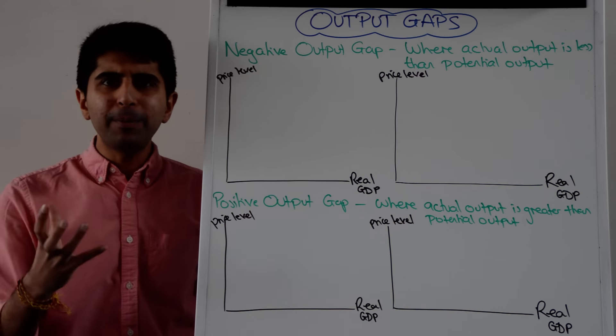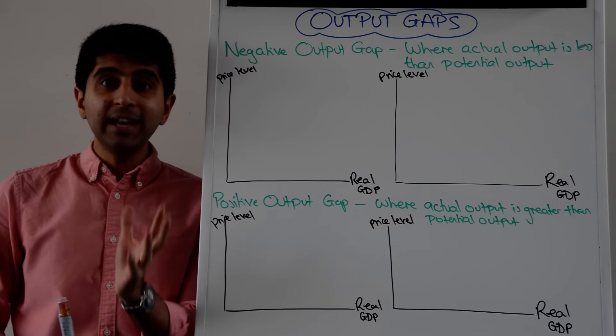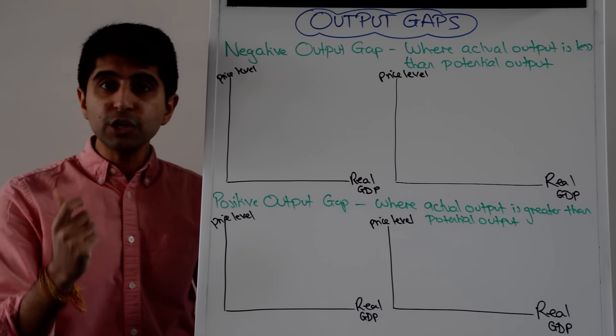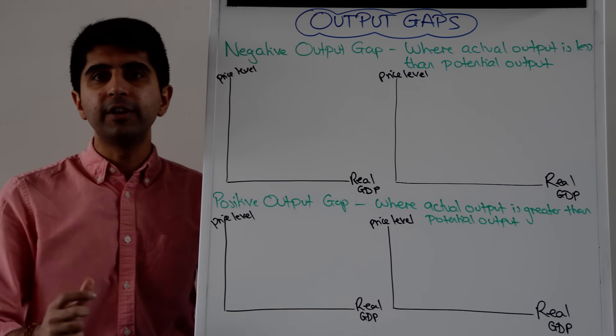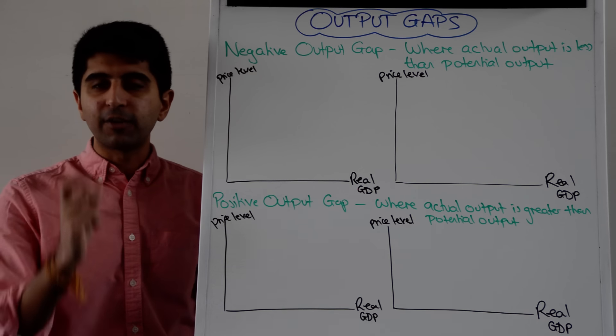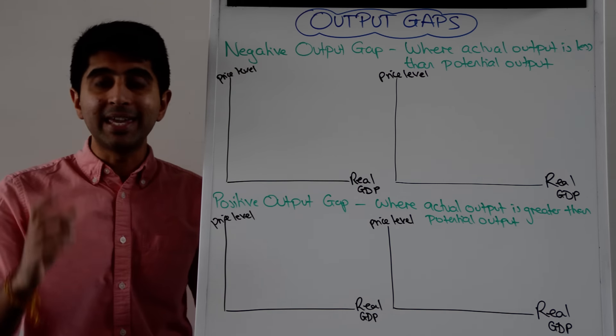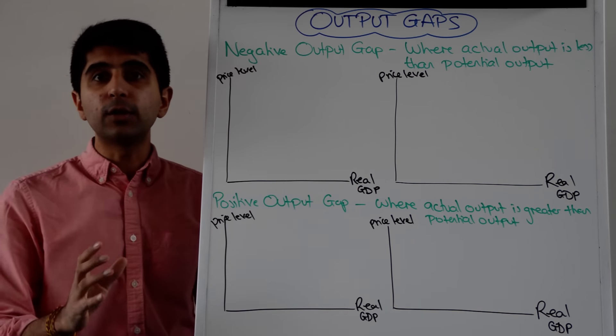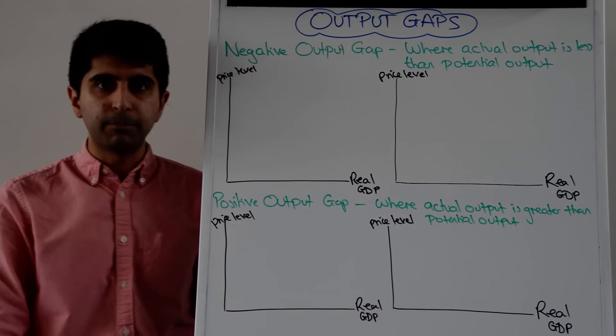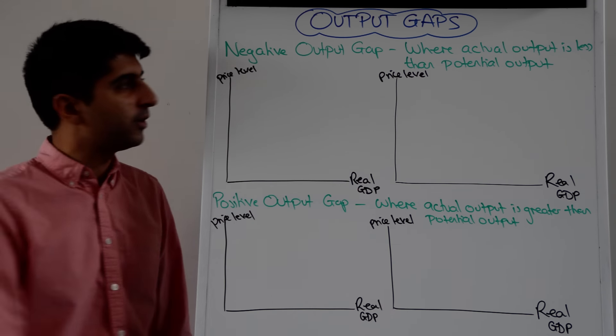Hi everybody! Output gaps occur anytime where the actual level of output is different from the potential level of output, i.e. it is not equal to the full employment level of output.